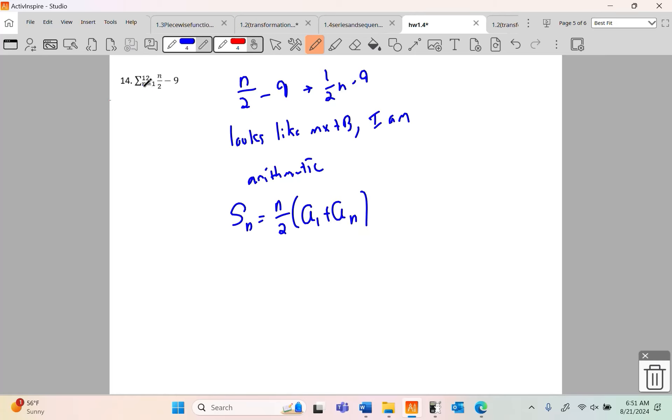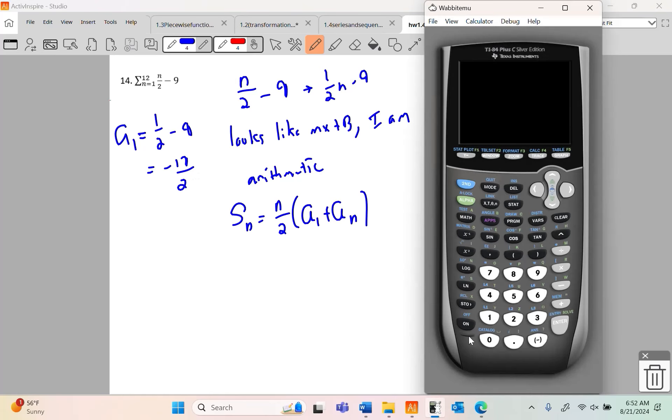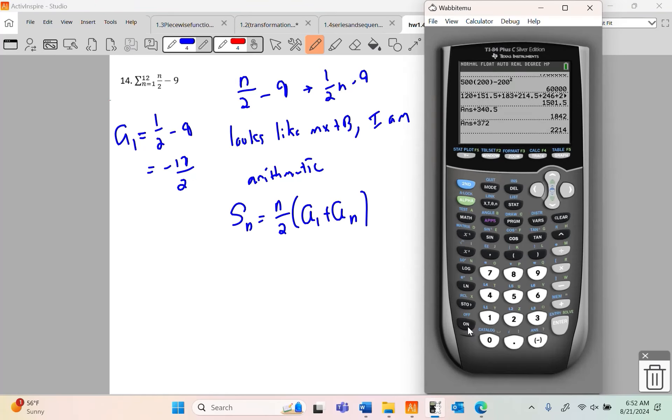But I'm going to have to find the first term. I can look over here at sigma. And sigma says, I find the first term by plugging in 1. So a sub 1 happens when you plug a 1 in. It's a half minus 9. And that's negative 8.5, if you like decimal, or negative 17 halves. I'm going to go with negative 17 halves. Like, what did Milbrath just do? How did he do that?